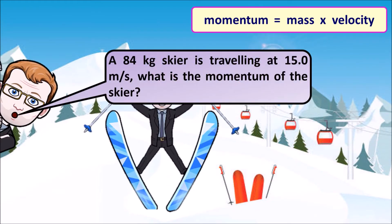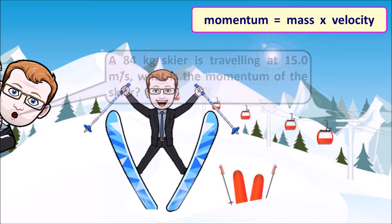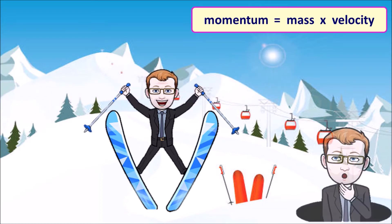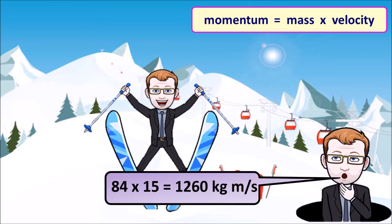If we've got a skier moving at 15 meters per second with a mass of 84 kilograms, its momentum would be 84 times 15, which gives us 1260 kilogram meters per second.